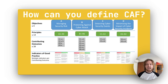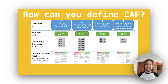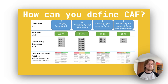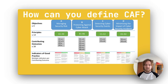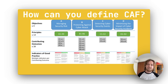So the layout of CAF: CAF is divided into four main objectives. These objectives make it easier for an organisation to understand which part of cybersecurity to work on. These objectives are built around 14 principles, which go further into detail about specific parts of cybersecurity. For example, B2 is for everything related to identity and access management.